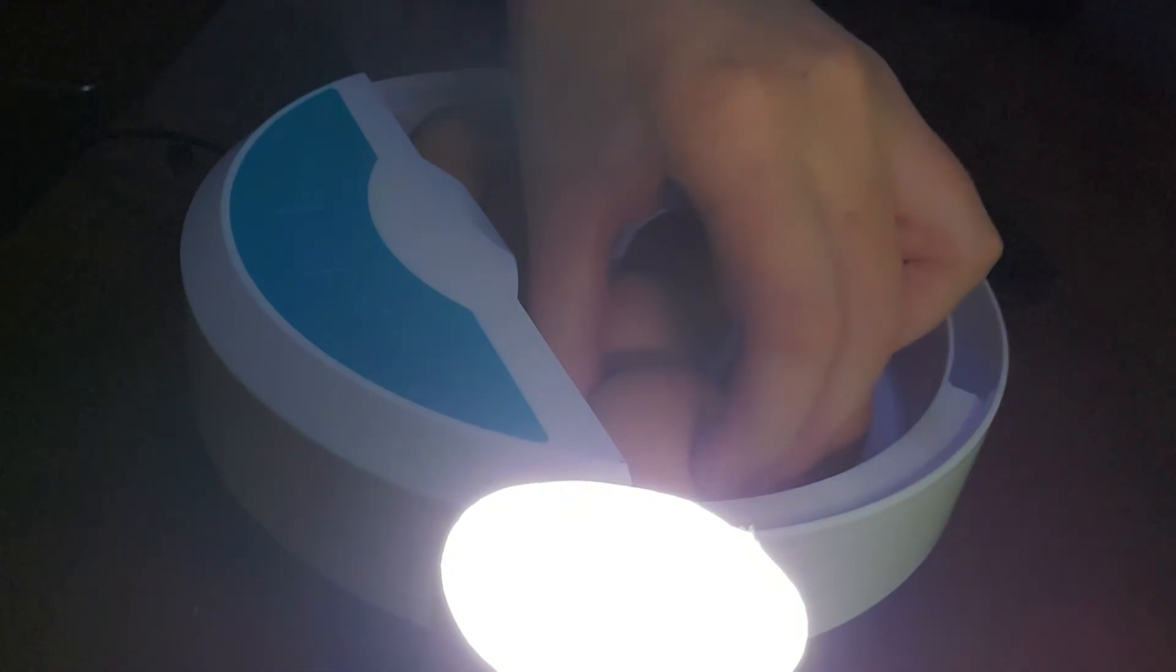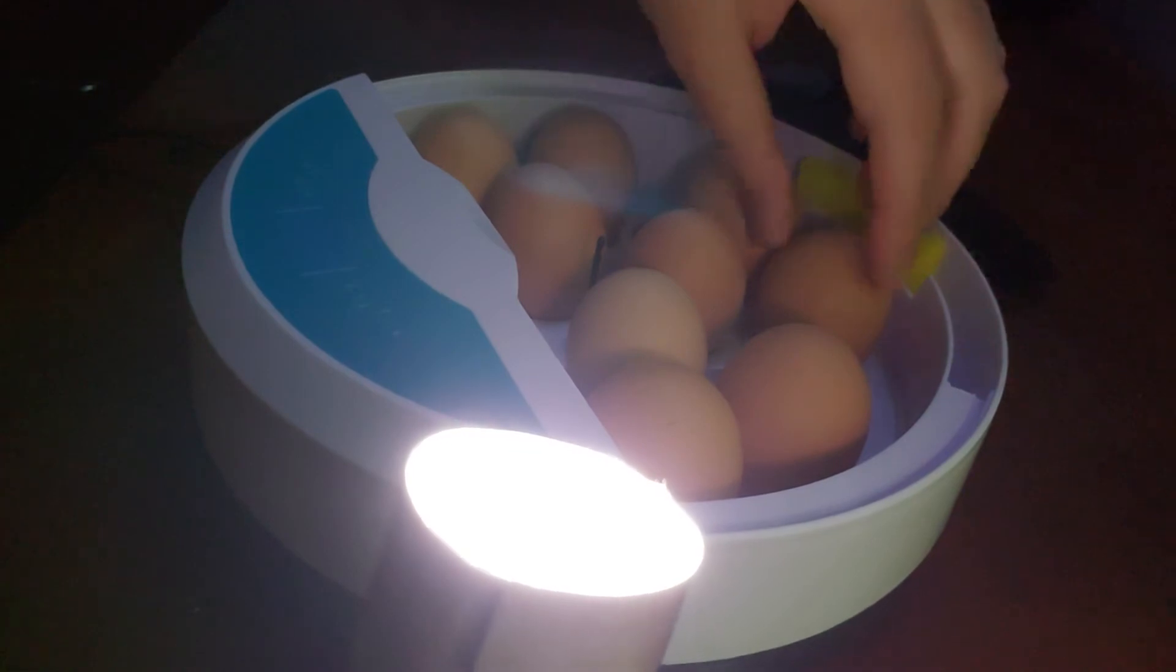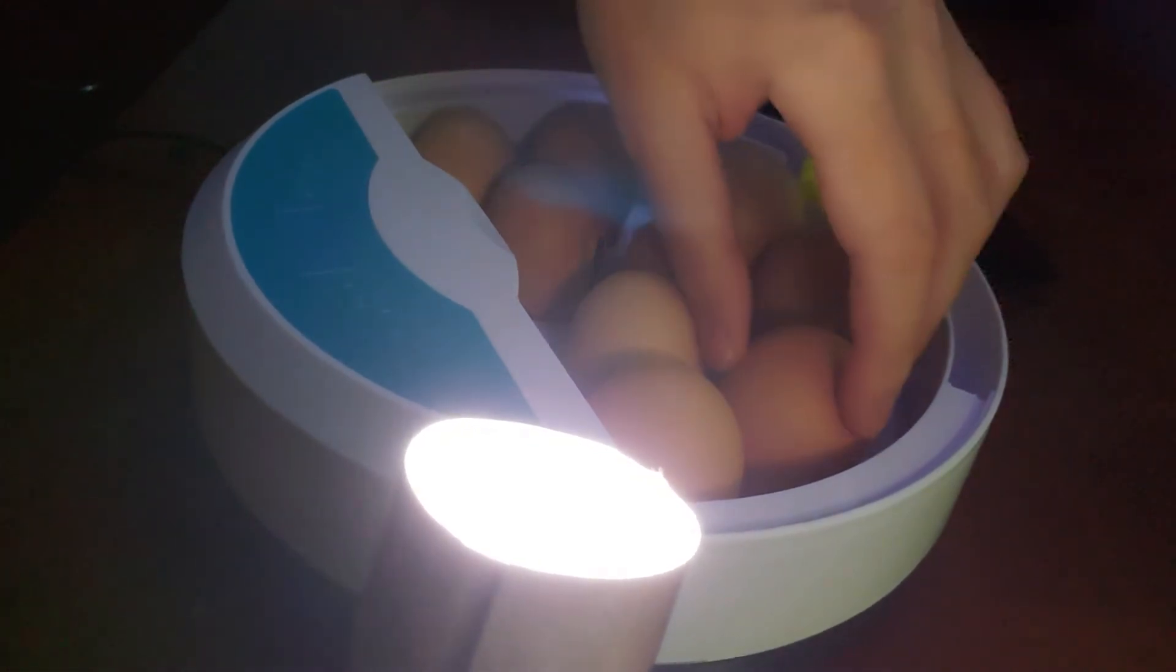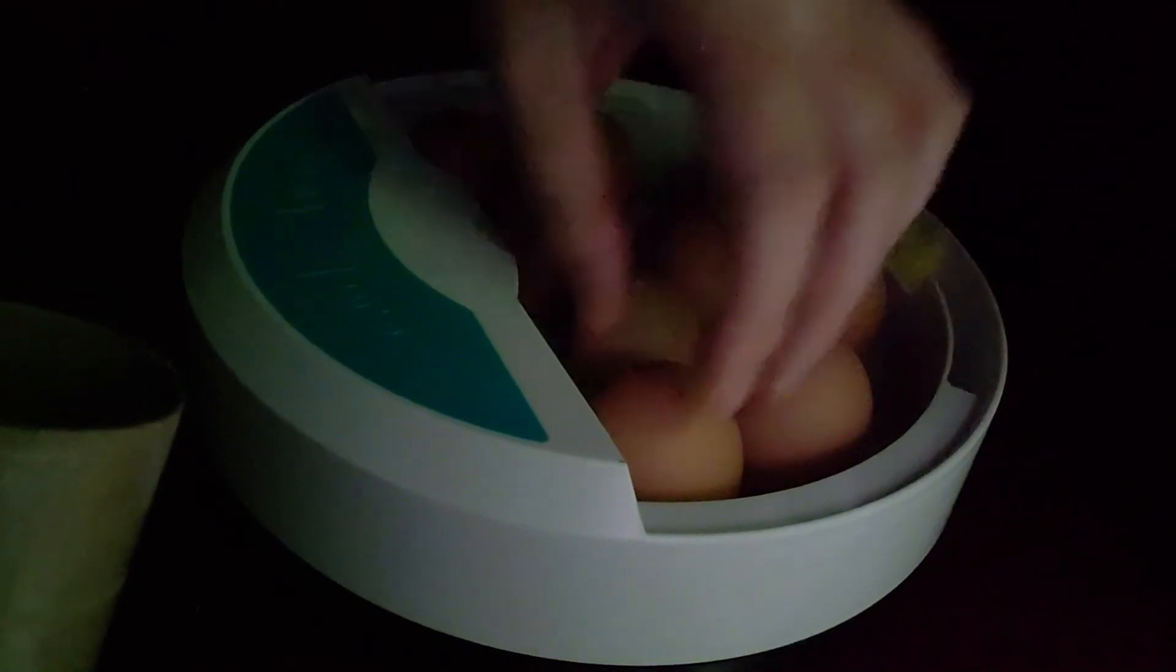Also I'd like to mention the eggs in the incubator should be pointy side down and you want to just kind of tilt them to the side a little bit when you put them back in.